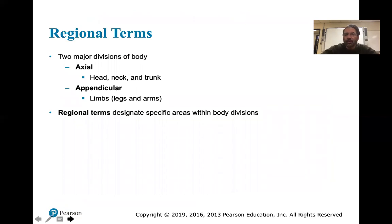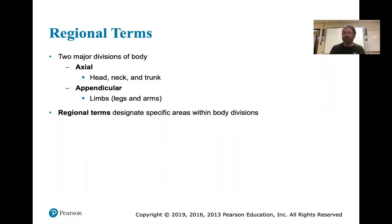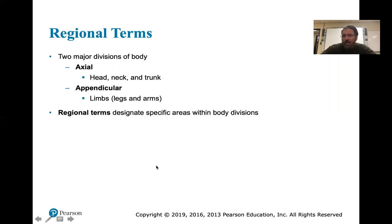The two major divisions of the body: axial and appendicular. Axial — think of the x, y, z axis — is your head, neck, and trunk, right down the sagittal plane. Appendicular refers to the appendages — your limbs, arms, and legs. Regional terms designate specific areas within those body divisions, such as thoracic and cranial. When you get into gross anatomy or grad school, you'll start working through regional sections of the body.